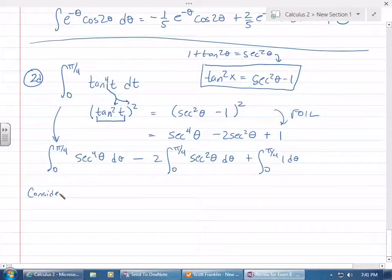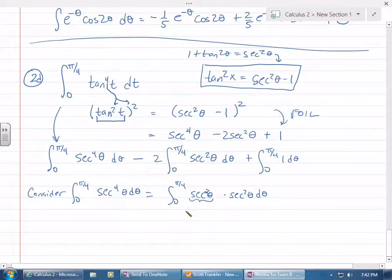Consider the integral from 0 to pi over 4 of secant to the fourth theta d theta. I'm going to rewrite that as integral from 0 to pi over 4 and pull off one of my secant squareds following that rule. Whenever you have an even power of secant, pull that off and then rewrite this as 1 plus tangent squared.